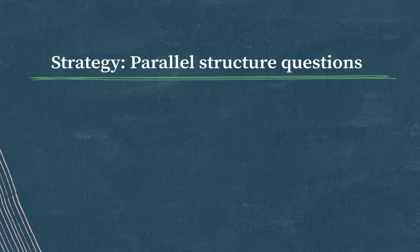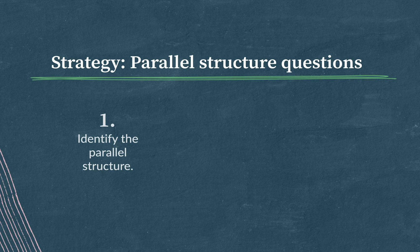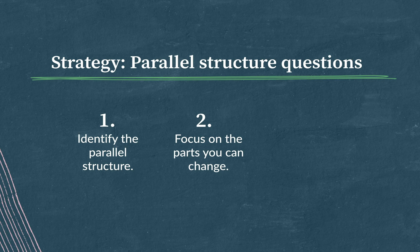Let's review the strategy. When you're looking at structured elements in a list, first, identify the parallel structure. What's happening in the sentence, and is it being interrupted? Next, focus on the parts you can change. How can you make the underlined portion match the part of the sentence that isn't underlined?